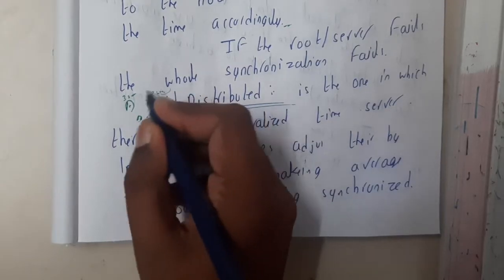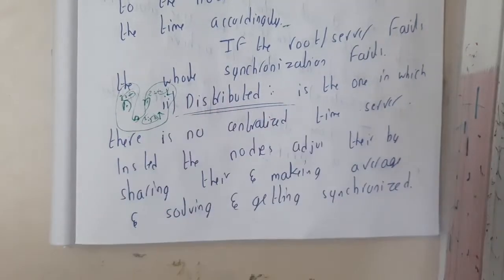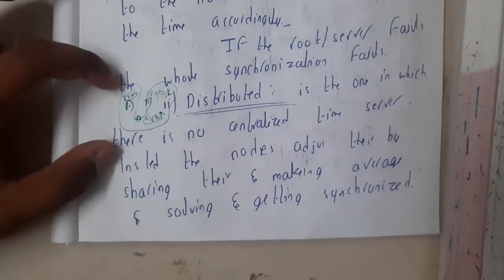In this situation they will say you increase ten minutes, you decrease ten minutes, and at the end they will end up at 3 o'clock. In that way, that is distributed synchronization.